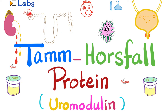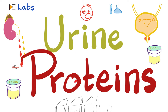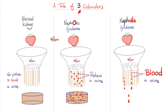Please watch the videos in this lab's playlist in order, especially the video on urine proteins and the one on urine casts. A normal kidney is like a beautiful colander, letting no proteins and no blood into the urine. A kidney with nephrotic syndrome will lead to tons of protein in the urine. A kidney with nephritic syndrome will lead to blood in the urine, because 'itis' means inflammation — the kidney is inflamed and shedding tears of blood.